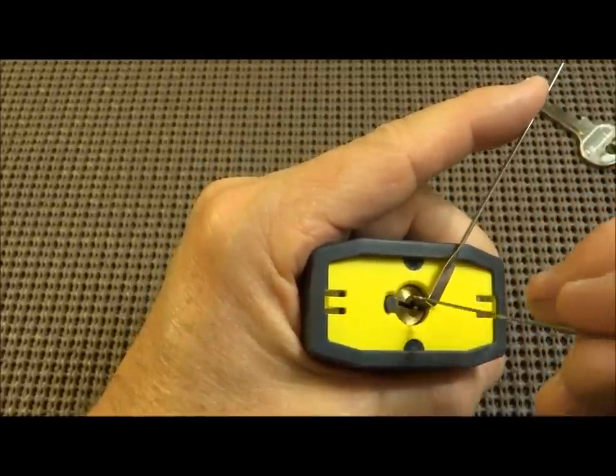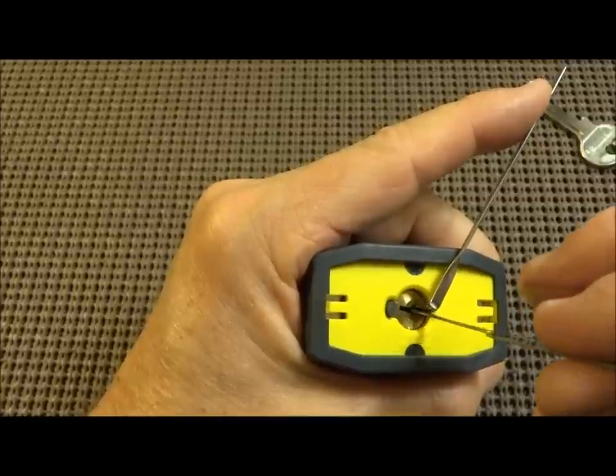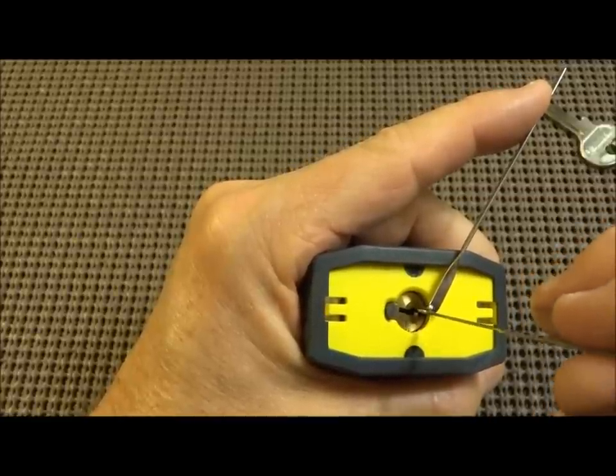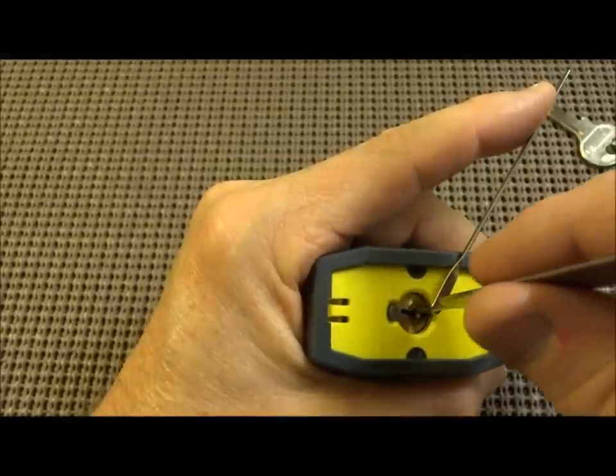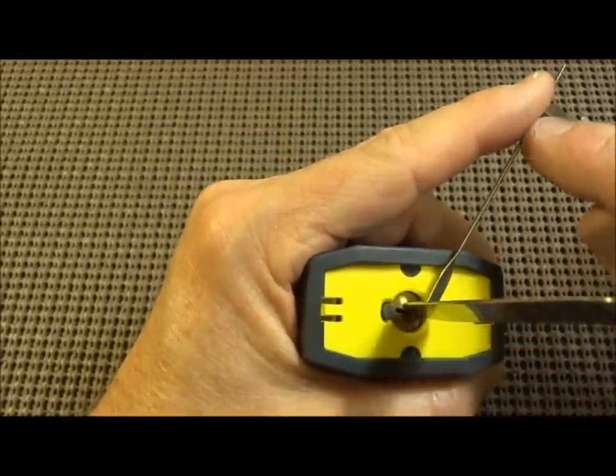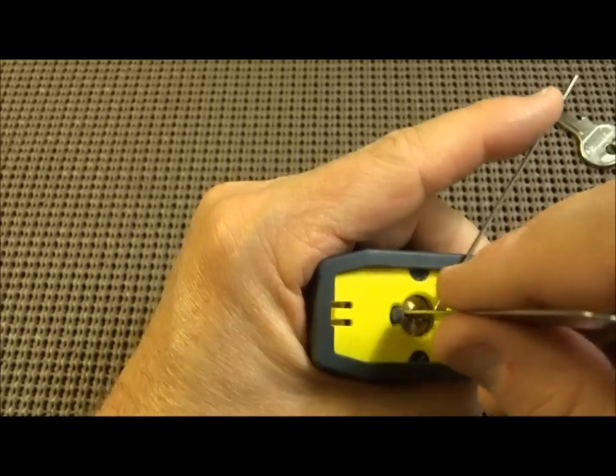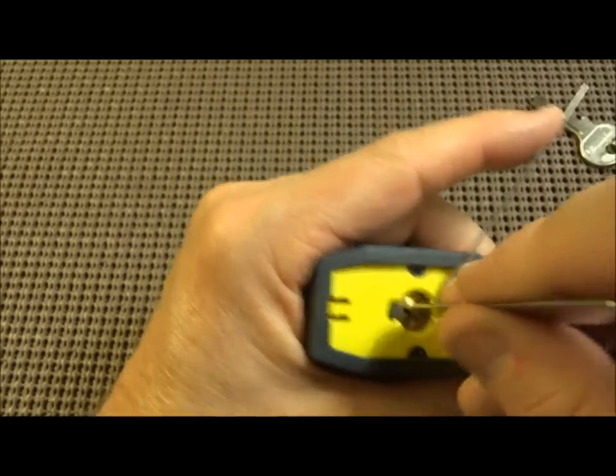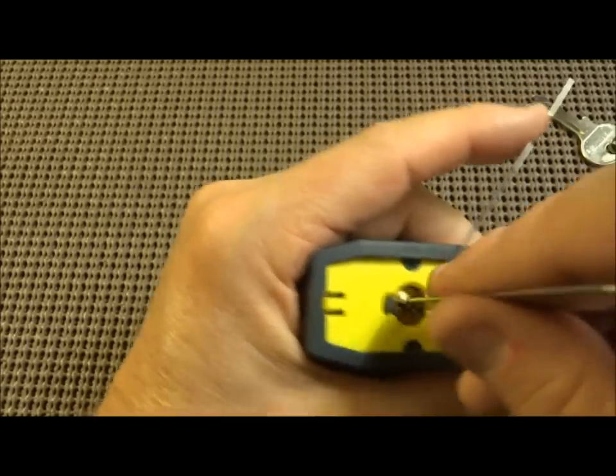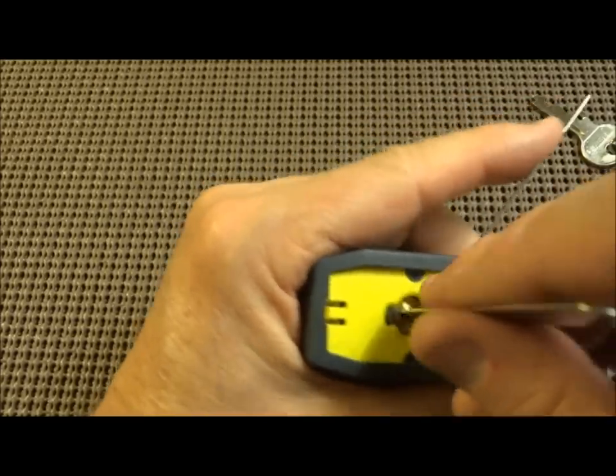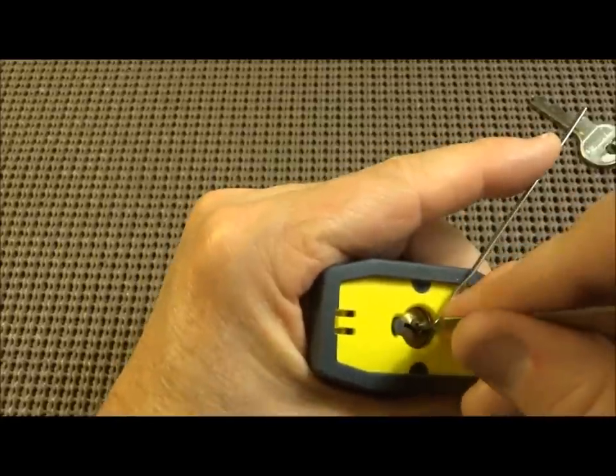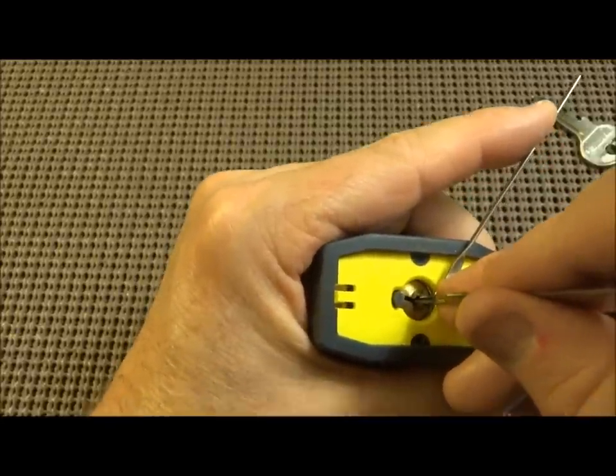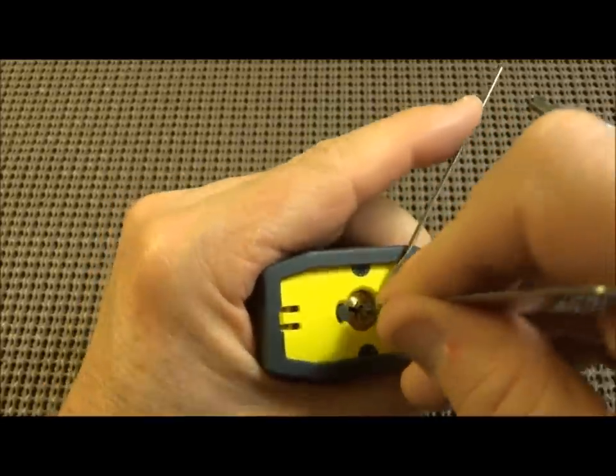If that happens, it might mean that you have not completely set whatever pin you tried to set last. So what you can do, you can put your pick all the way in, release with your tension, and you can kind of jiggle it, just jiggle. And what I'm hoping for is that if we improperly set a pin, we didn't push him all the way home, or we pushed him into the over-set condition, by jiggling, it'll loosen him up, and he'll pop out and give us another crack.